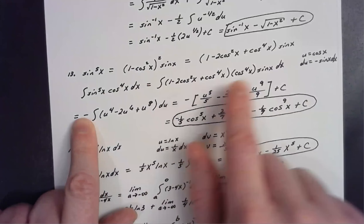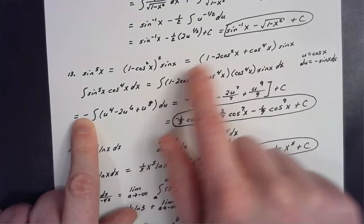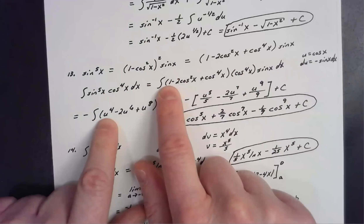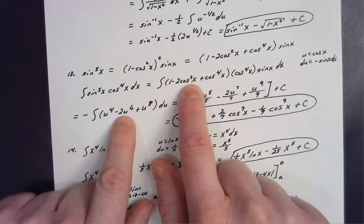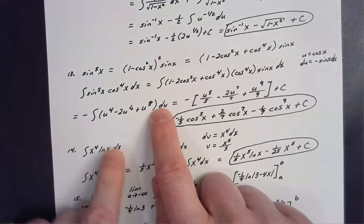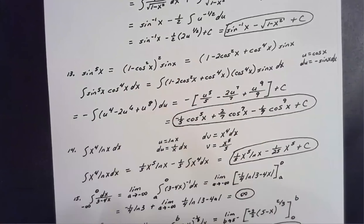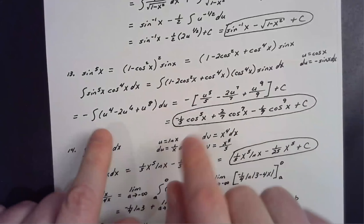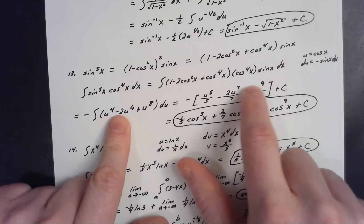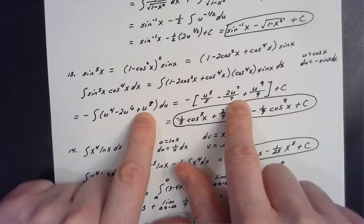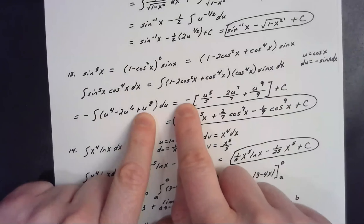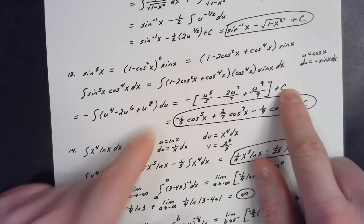Distributing cos⁴x gives u⁴ − 2u⁶ + u⁸ inside the integral. Applying the power rule: u⁵/5 − 2u⁷/7 + u⁹/9, all multiplied by the negative out front, plus the constant of integration.